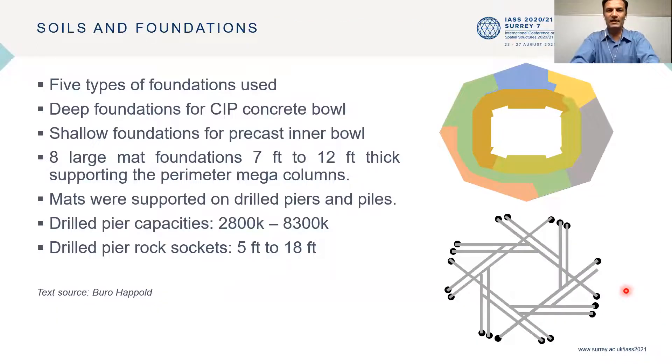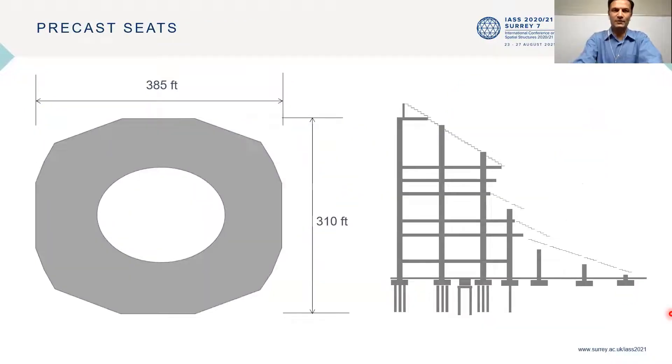There are five different foundation types that are used in the structure depending on the soil type and the loads. The stadium is a segmented oval 385 feet by 310 feet in plan and it is 305 feet tall. The stands are made of reinforced concrete and a robust network of steel trusses forms the supporting structure for the operable roof above.